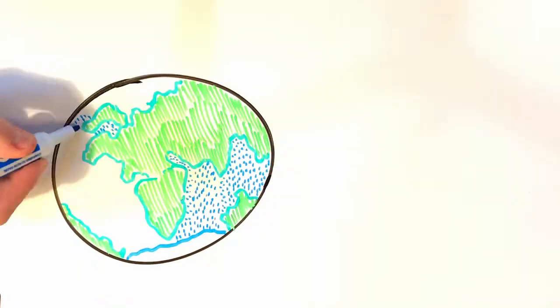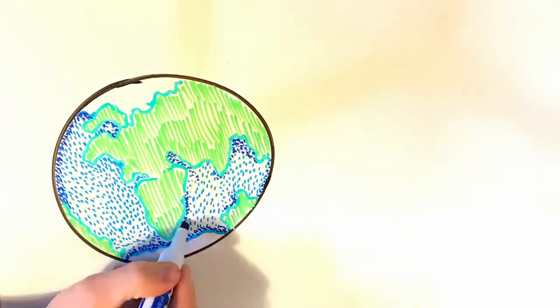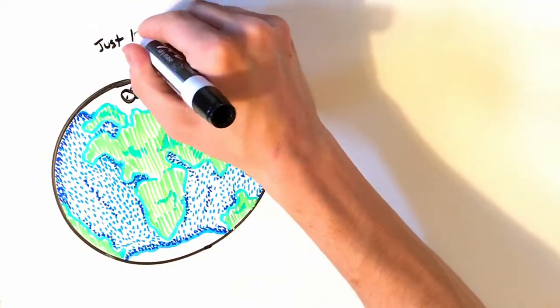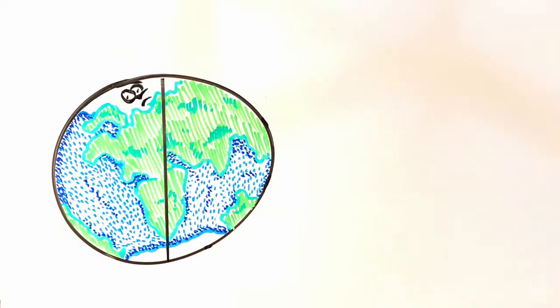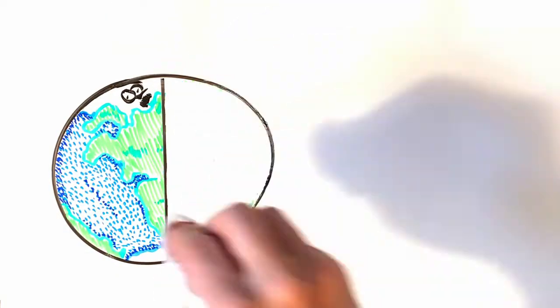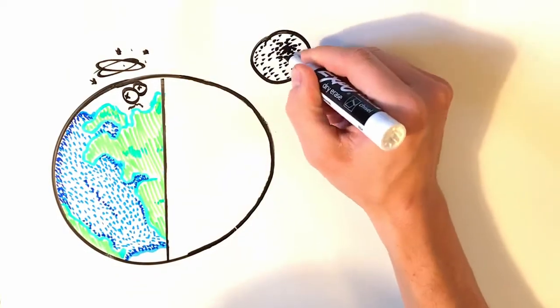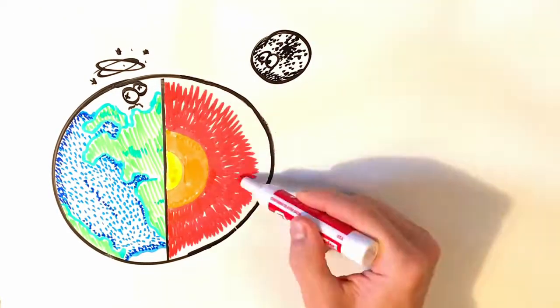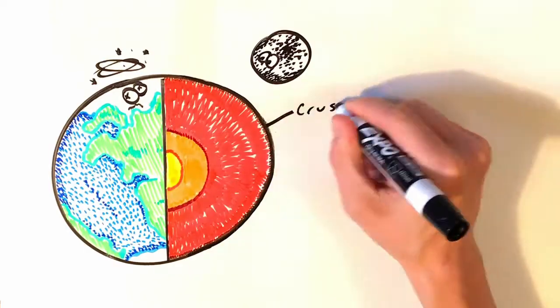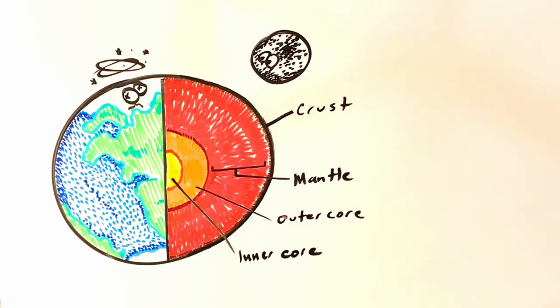So today we're going to examine a claim made about the planet Earth that you may have heard before, about how the Earth is built and what it does. Now if you were to take the Earth and slice it in half and sort of take a look inside, sort of dissect it, what you would find is that the Earth is actually made out of layers. These layers have distinct properties. On the very outside we have the crust, under that we've got the mantle, and then we have the outer core and the inner core.